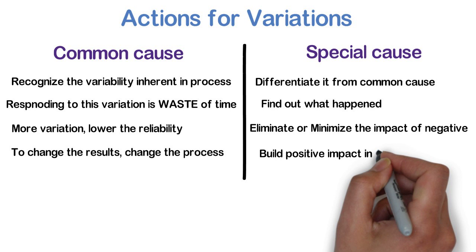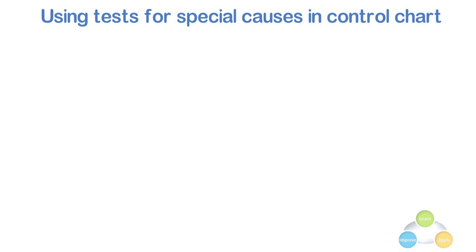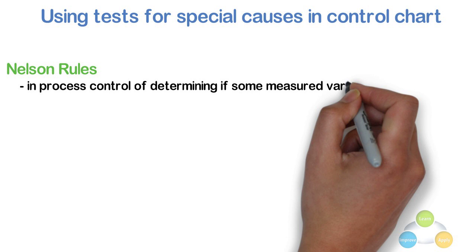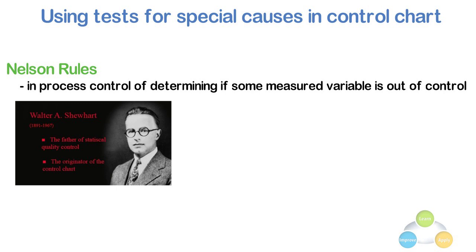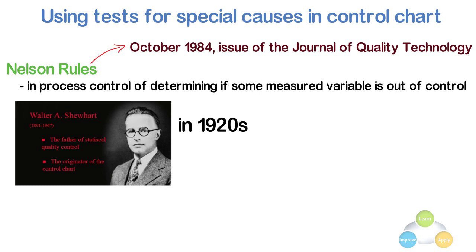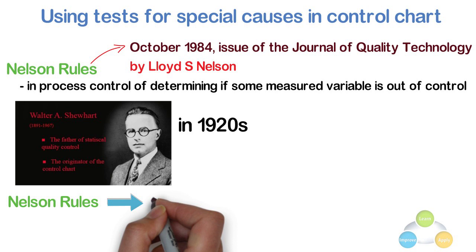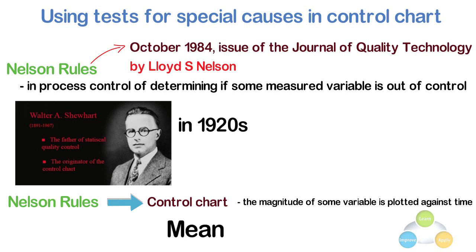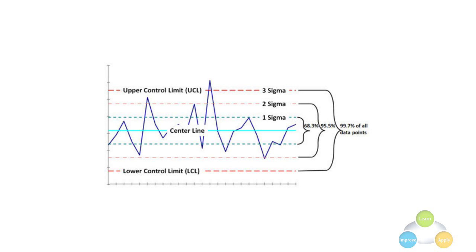Using test for special causes in a control chart. Nelson rules are a method in process control of determining if some measured variable is out of control. Rules for detecting out of control or non-random conditions were first postulated by Walter A. Shewhart in the 1920s. The Nelson rules were first published in October 1984 issues of the Journal of Quality Technology in an article by Lloyd S. Nelson. The rules are applied to a control chart on which the magnitude of some variable is plotted against time. The rules are based on the mean value and the standard deviation of the samples. The dashed horizontal lines in the following illustration represent distances of 1 sigma and 2 sigma from the center line.